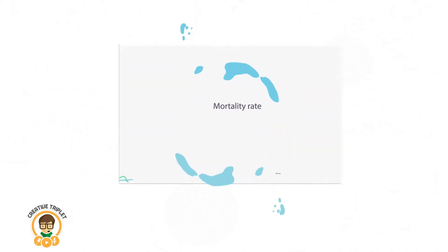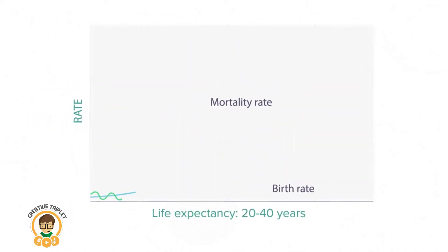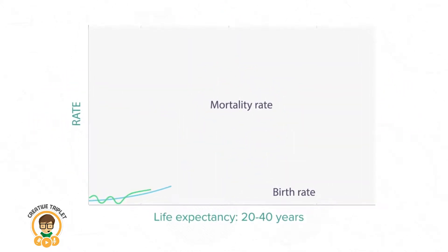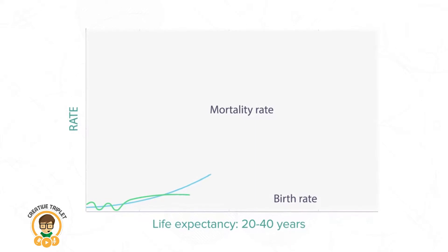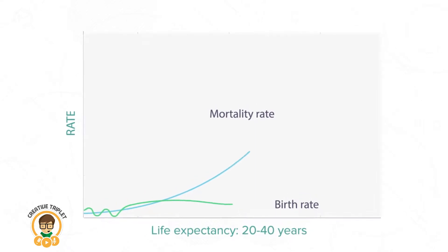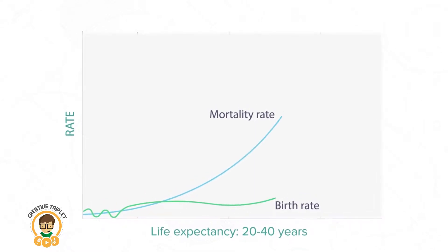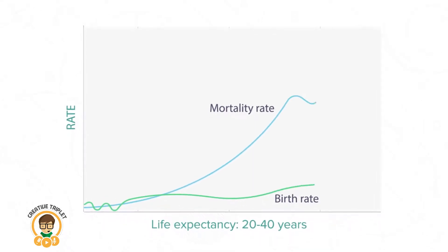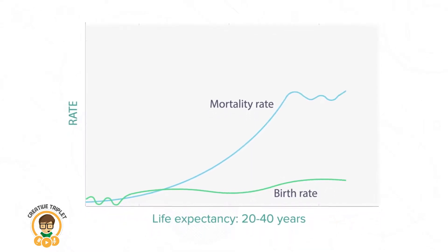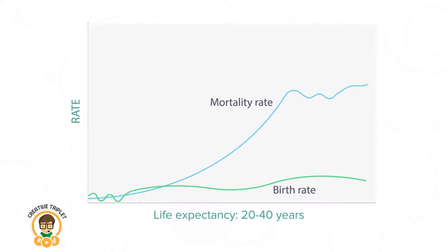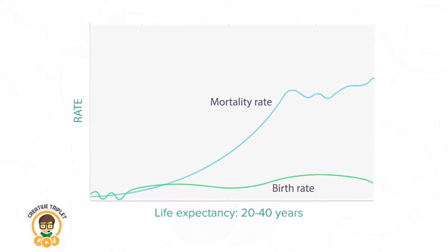Because mortality rates were high, population growth was flat and life expectancy at birth was low, fluctuating between 20 and 40 years during this period.